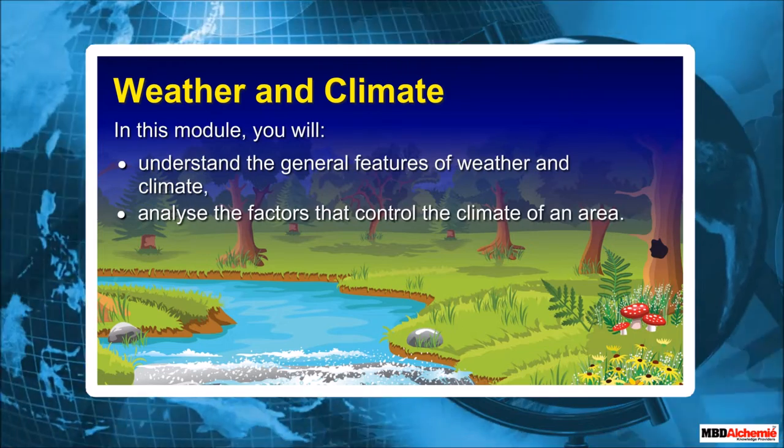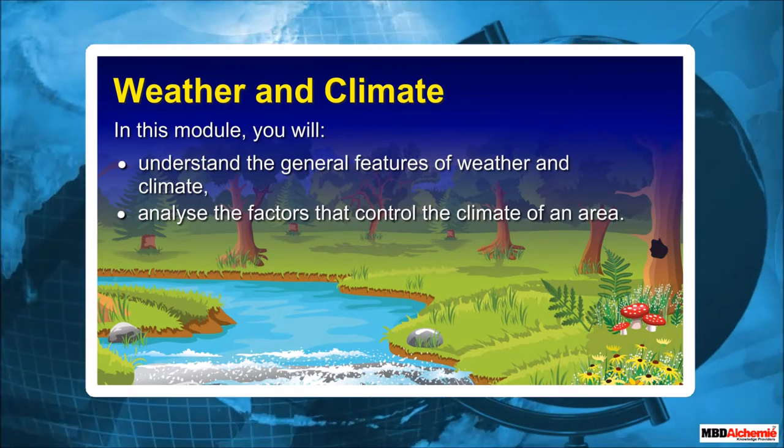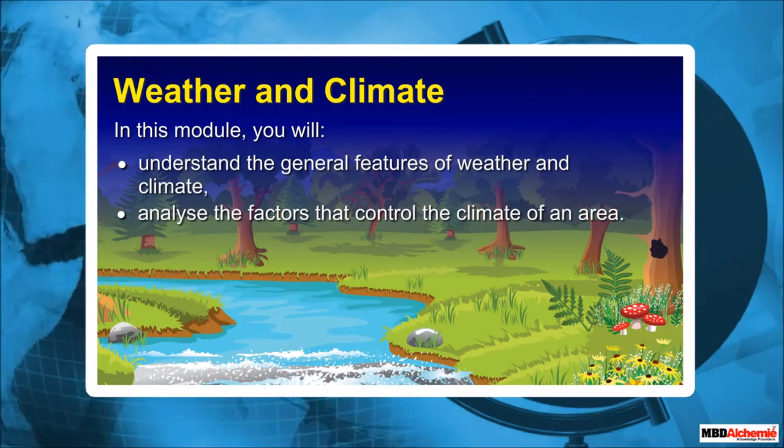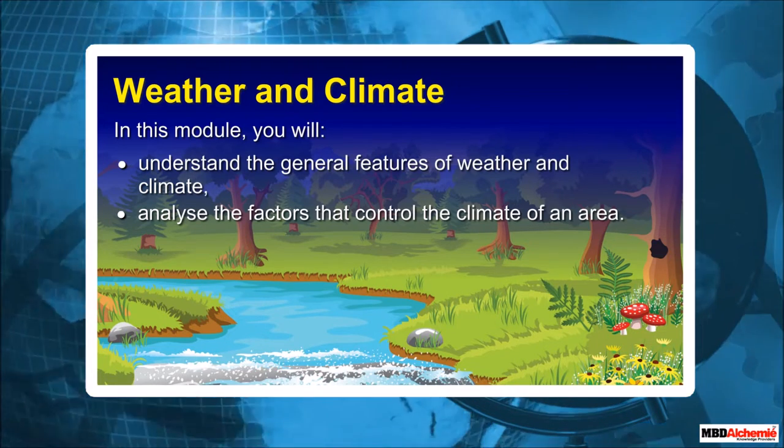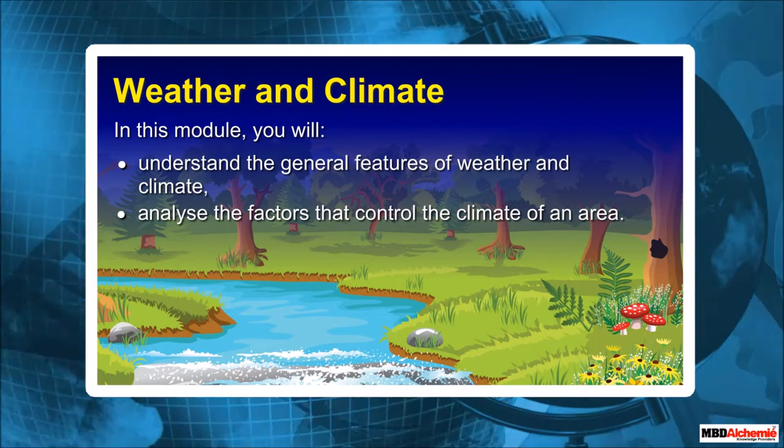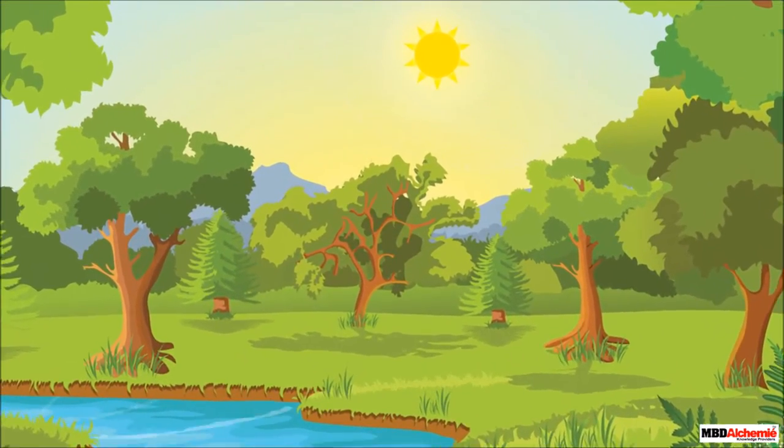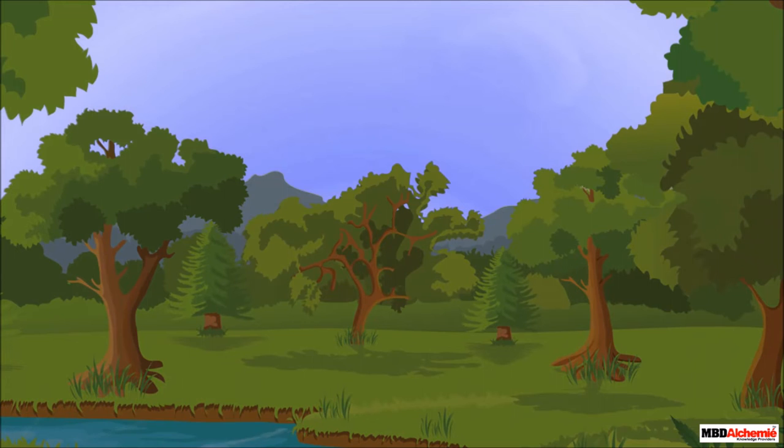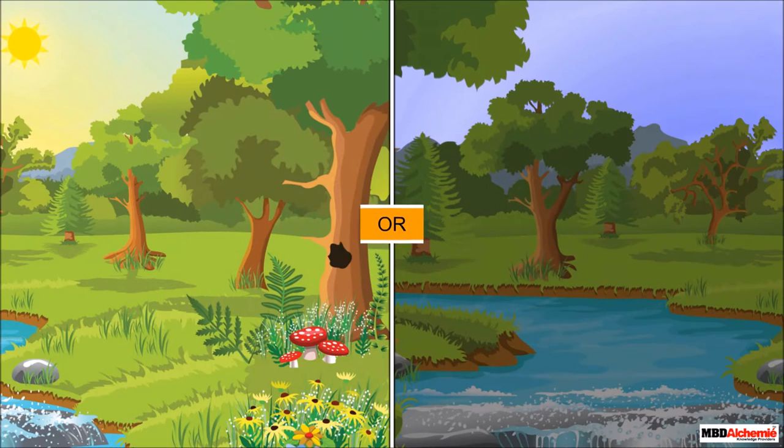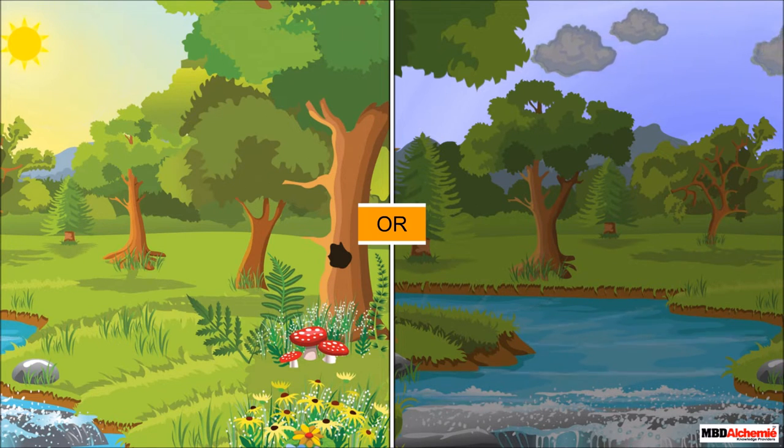Weather and climate. In this module you will understand the general features of weather and climate and analyze the factors that control the climate of an area. How is the day today? Is it sunny and bright or damp and cold? Friends, you must have noticed that every morning we notice how the day is, whether the sun is shining bright or is under cloud cover.